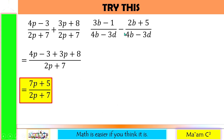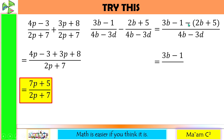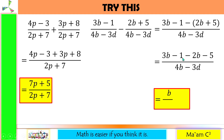Let's have another one — this time we have subtraction. Be careful: if we have subtraction, we have to enclose our subtrahend in parentheses. So we have 3b minus 1 minus quantity (2b + 5), all over the same denominator. You have to enclose the subtrahend in parentheses because we have to distribute the negative sign on the terms inside. So: 3b minus 1, then negative times 2b is negative 2b, and negative times positive 5 is negative 5. Copy the denominator. 3b minus 2b is b, and negative 1 minus 5 is negative 6. Copy the denominator. We cannot cancel b since we have an operation here.